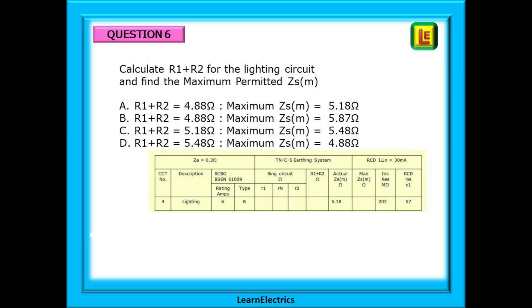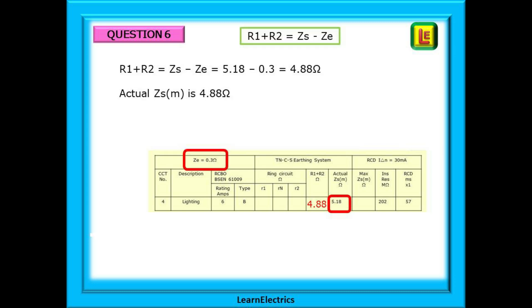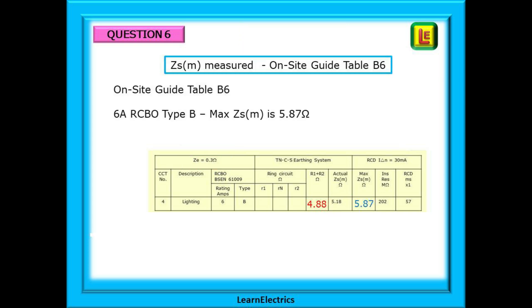Question 6 is next. We must calculate R1 plus R2 for the lighting circuit and find the maximum permitted ZSM. Pause the video, find the answers and then move on. The formula is as shown at the top. It's an easy rearrangement of the other formulas. We've been given ZS and we've been given ZE. So R1 plus R2 is simply ZS minus ZE. 5.18 minus 0.3 is 4.88 ohms. It's that simple.